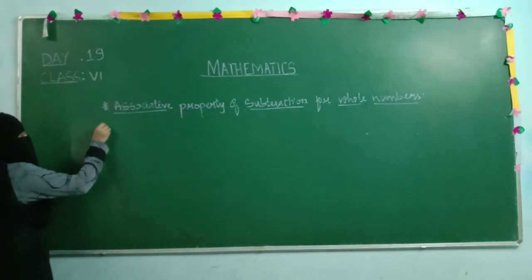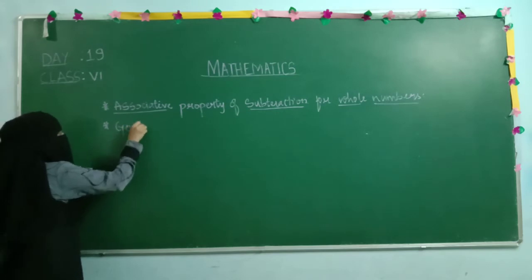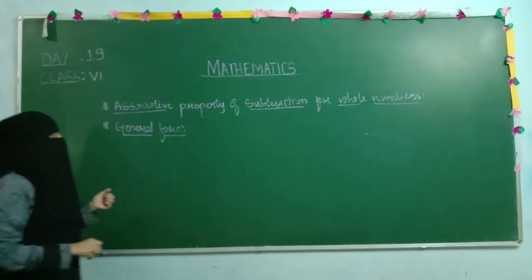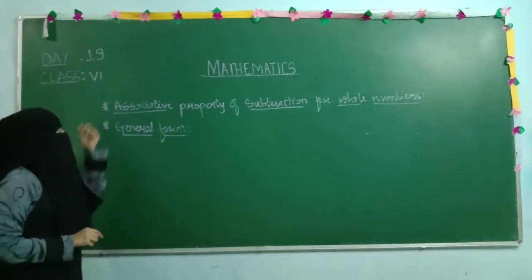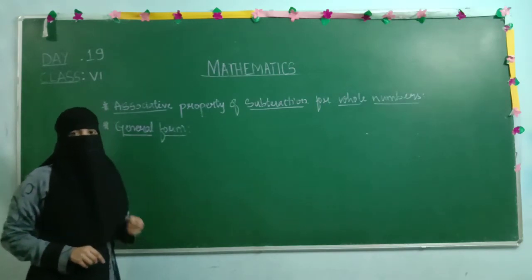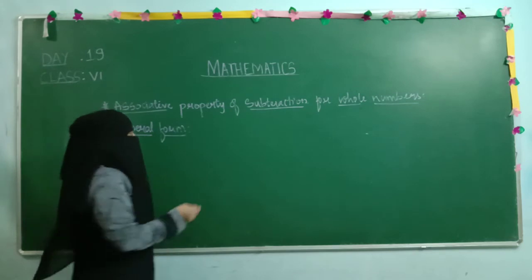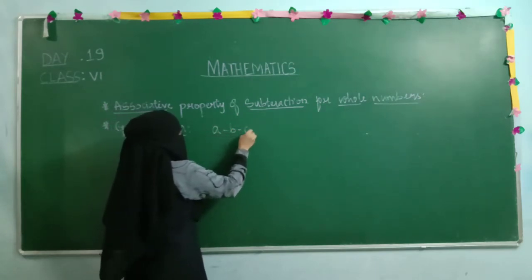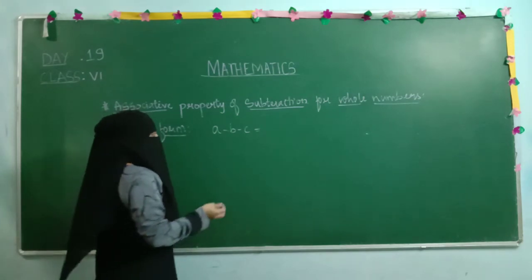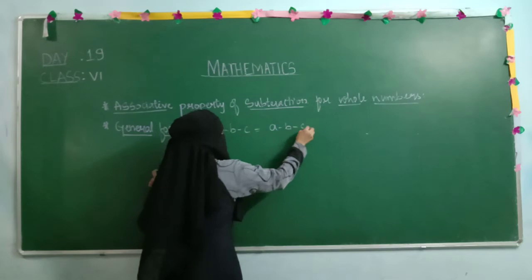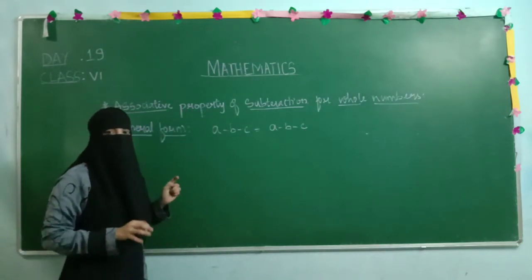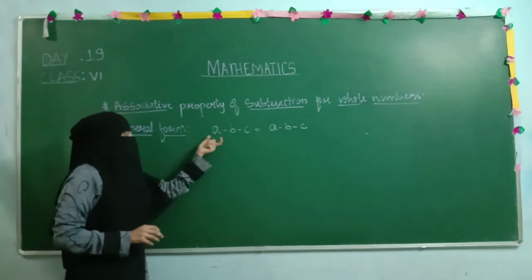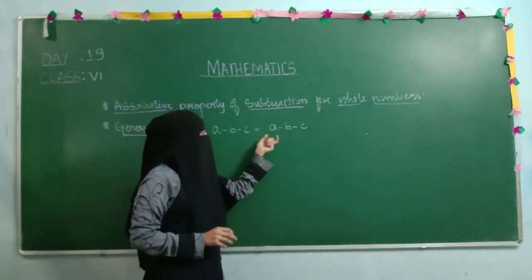First we need to write the general form. In associative property we have three terms, whereas in commutative property we have two terms. We take A, B, C on both sides with the subtraction operation. So: A minus B minus C equals to A minus B minus C — same on both sides.